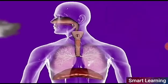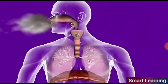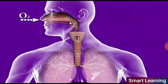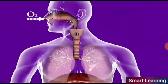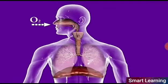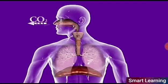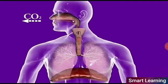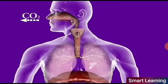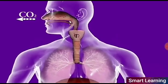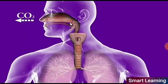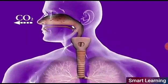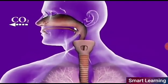The alveoli provide a surface where the exchange of gases can take place, and their walls contain an extensive network of blood vessels. The oxygen in the alveolar sac is taken up by the blood in the blood vessels to be transported to all the cells in the body. The blood takes up oxygen from the alveolar sac and releases CO2 back to it. This exchange of CO2 and oxygen takes place by the process of diffusion.